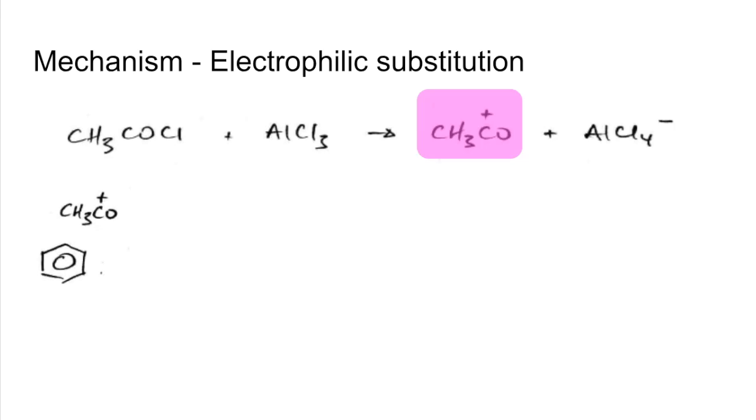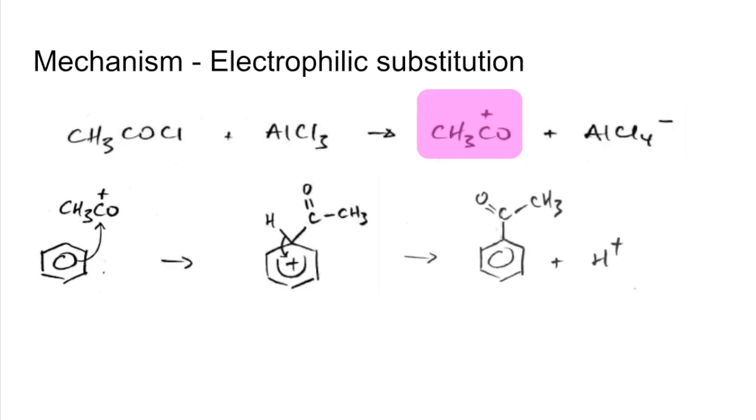So then we bring the benzene ring into play and it's virtually the same as the one you've just seen. A pair of electrons from the pi electron cloud are attracted to that positively charged carbon. We get the unstable intermediate. A pair of electrons goes back in to reform the pi electron cloud and we lose the H as an H⁺. So there's that step there and then we need to reform the catalyst just as before.